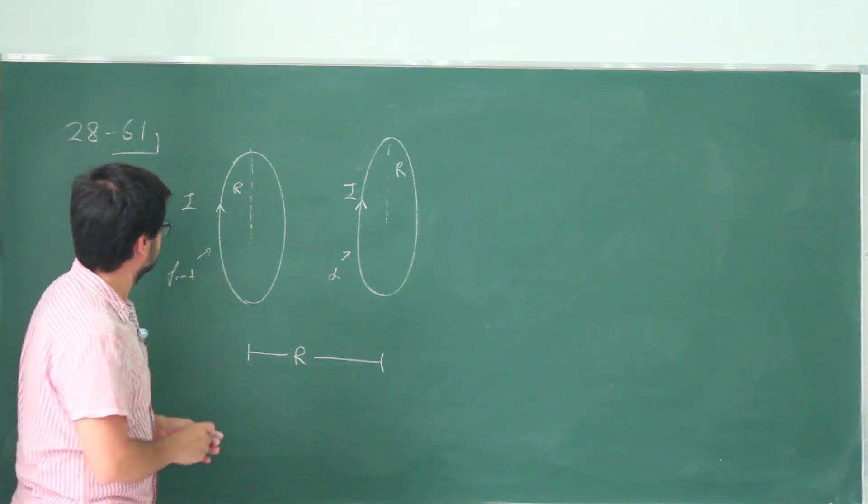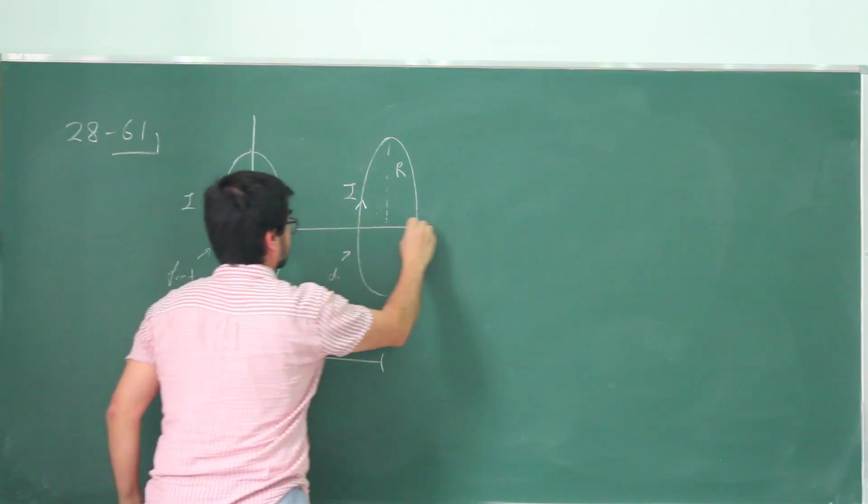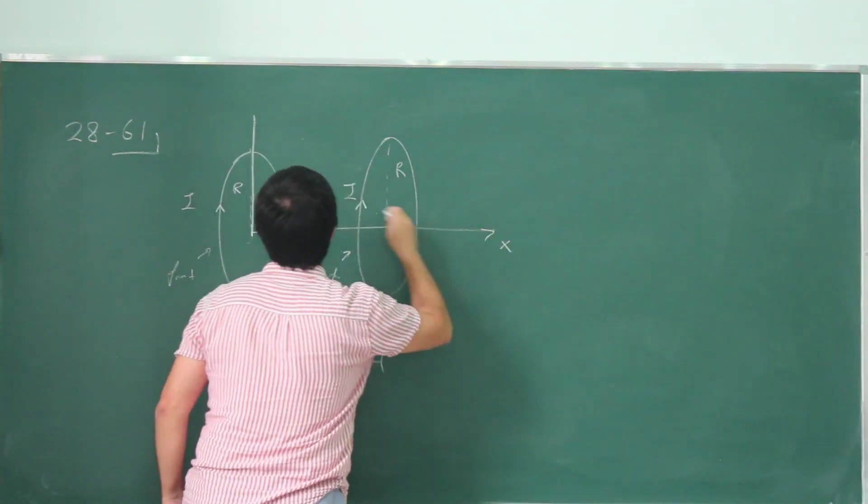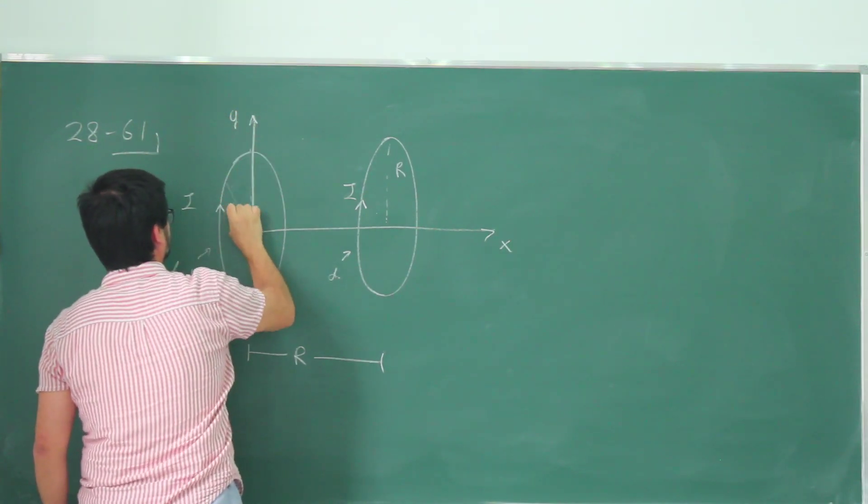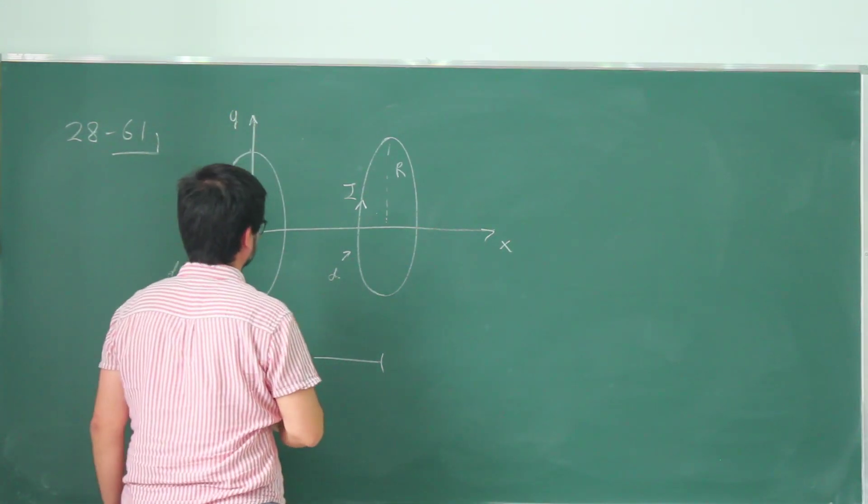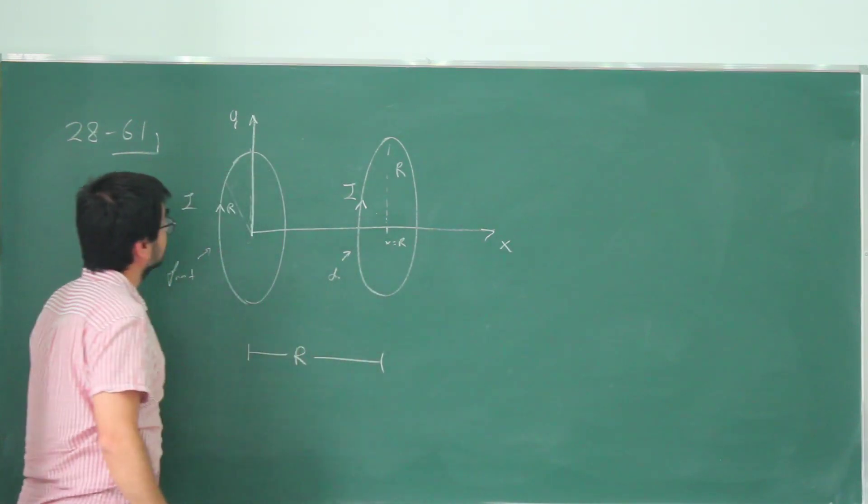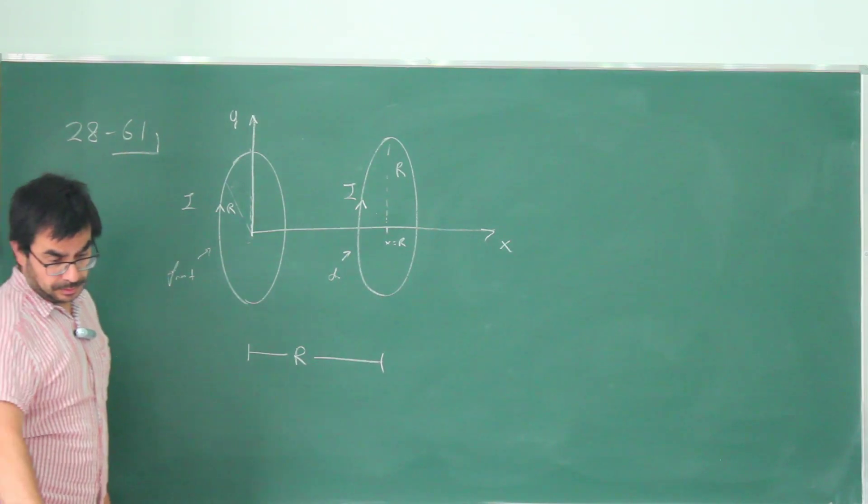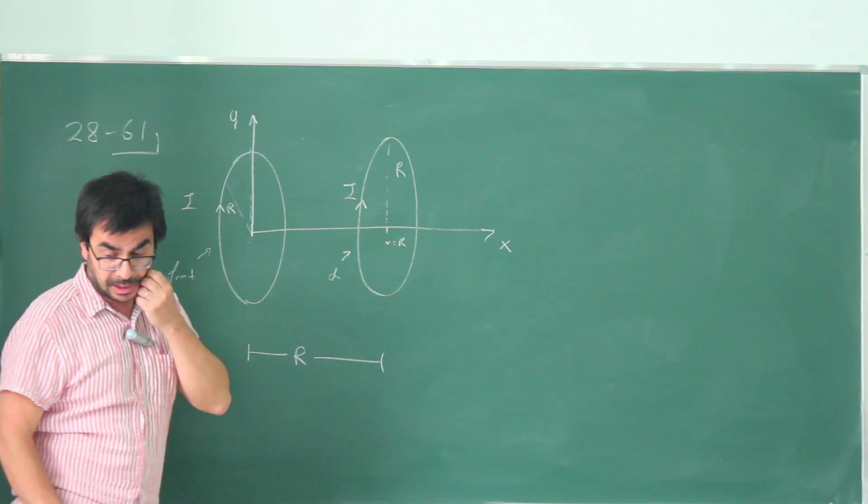So let's draw this coordinate system they are prescribing. This is x, let's say this is y. So this was perhaps a poor choice for the radius. This is x equals R. And we are to find the magnetic field along this axis.